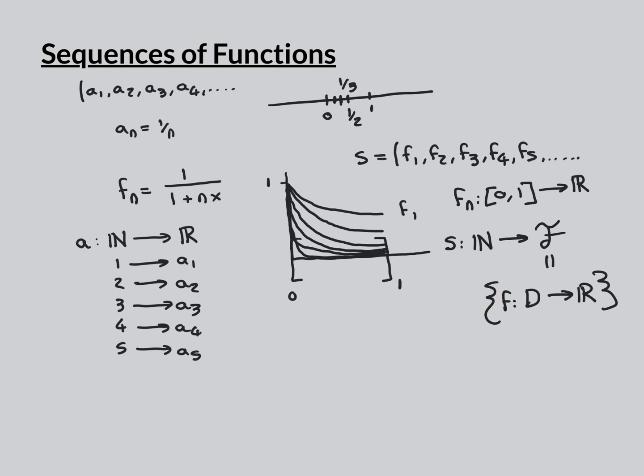Big F is the set of all real-valued functions from some domain D into the reals. In our example D was the interval [0,1], but it could be any subset of the real line. The map S sends 1 to f1, 2 to f2, 3 to f3, 4 to f4, and so on — capturing which function is which term in the sequence.